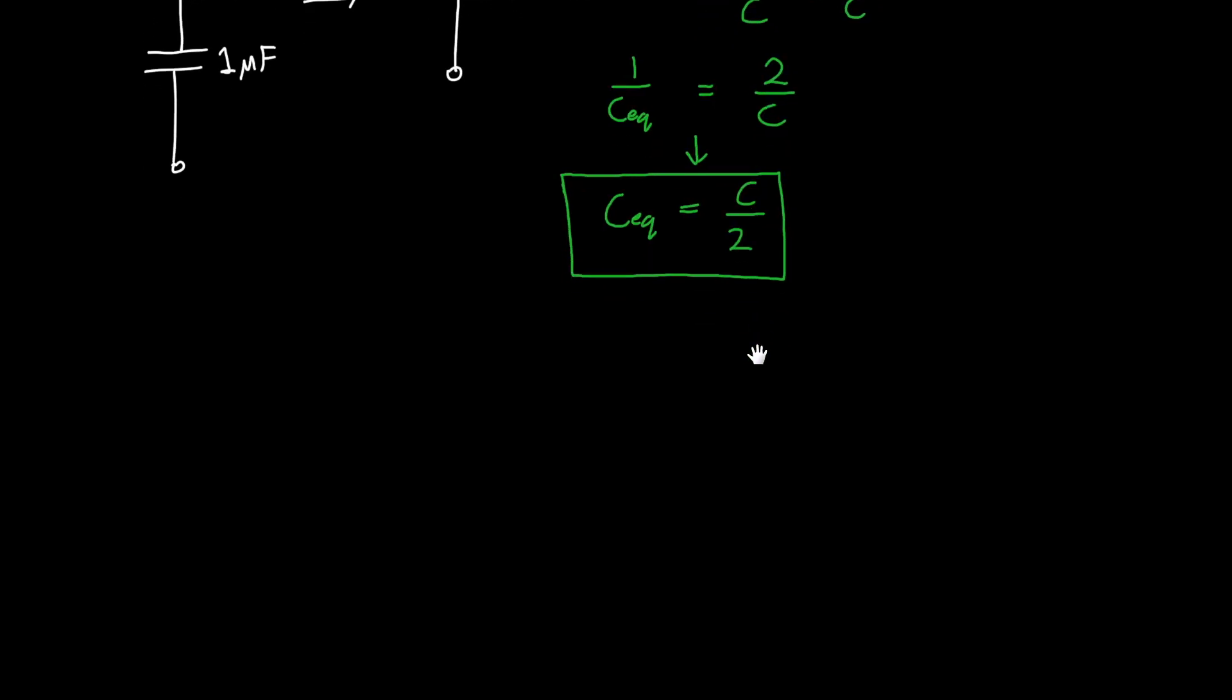Now let's do another example, what if instead of two capacitors in series, we have three capacitors in series, and let's say that they still all have the same capacitance C. So we have C, C, and C, and we want to figure out the equivalent capacitance.